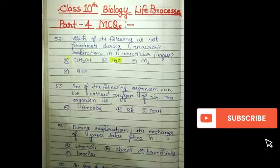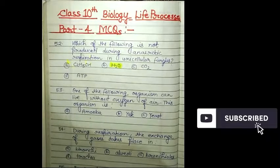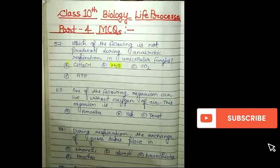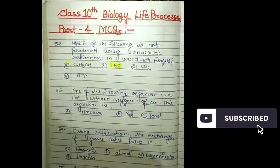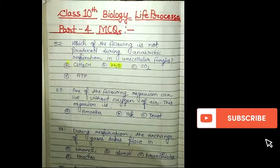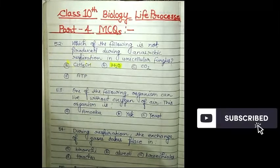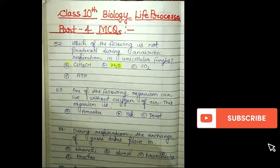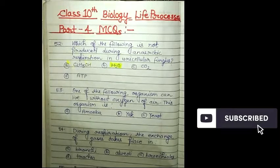Our next question: which of the following organisms can live without oxygen? The options are amoeba, yak, and yeast. Amoeba is a unicellular organism that needs oxygen for respiration. Yak is also a multicellular complex animal that also needs oxygen for respiration. We have studied in our chapter that it is only yeast which can ferment without oxygen, respiring without oxygen and producing ethanol, CO2, and a small amount of energy. So the correct option will be yeast.